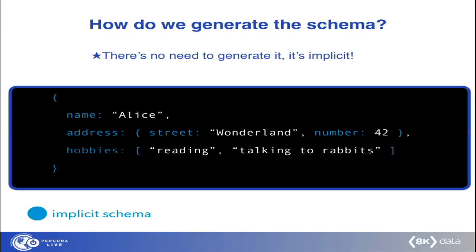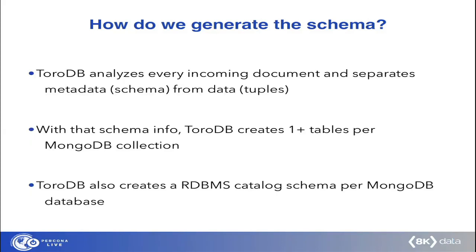How do we generate the schema? The answer is: we read it, because it's actually there. If we look at a JSON document — the parts painted in blue — it is a schema. It is an implicit schema available in the document. We just read it and separate it from the data. A MongoDB or JSON document is a set of data and a schema packed together. That's why different documents can have different schemas. TorDB takes every incoming document, analyzes it independently, and finds the target table or tables where to store the data. If those tables or columns don't exist, they are created automatically before the data is inserted. There is no need to create any structure beforehand or specify a schema or config file — all is inferred automatically from the source data.